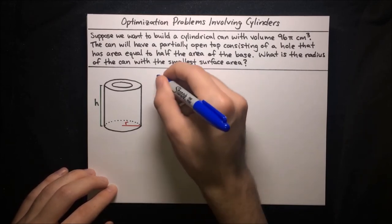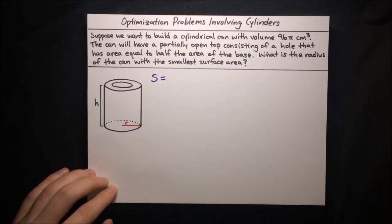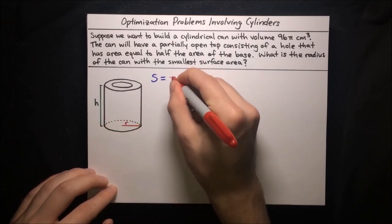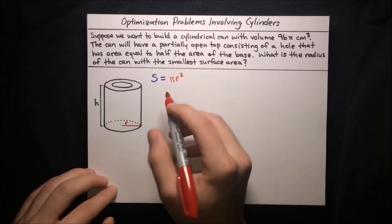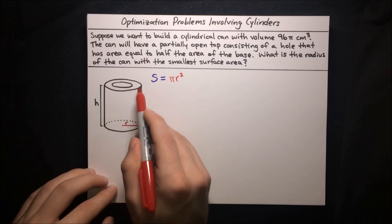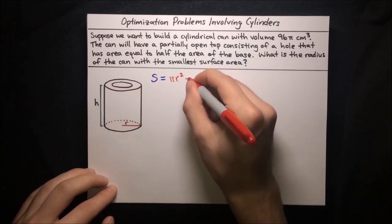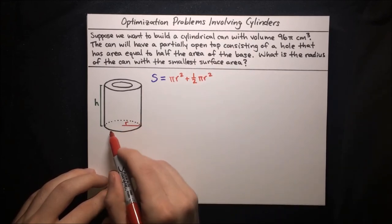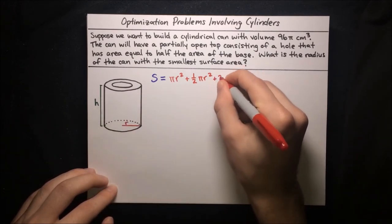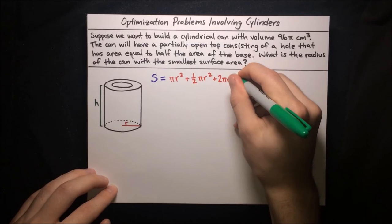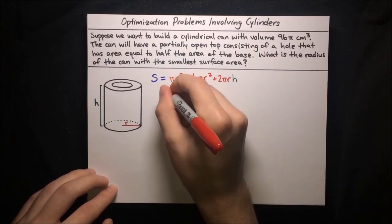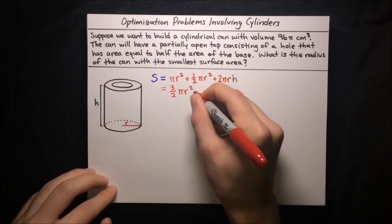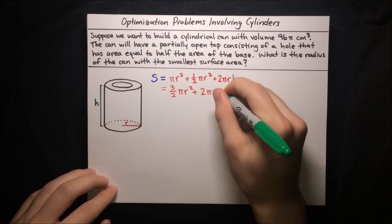Let's write a formula for the surface area. Surface area S equals the sum of the base area, the top area, and the lateral area. The base area is pi r squared. The hole has half that area, so the leftover washer part is also half that area: one-half pi r squared. The lateral area is the circumference times the height: 2 pi r h. Simplifying: S equals three-halves pi r squared plus 2 pi r h.